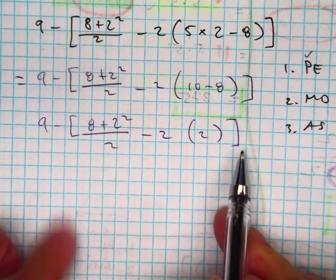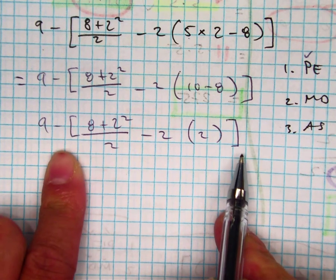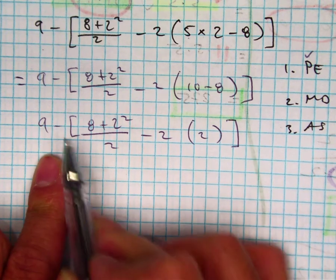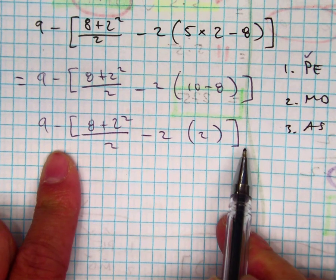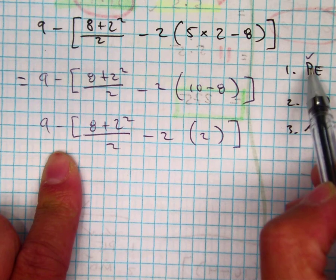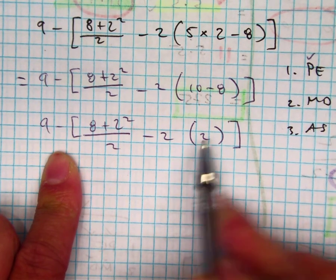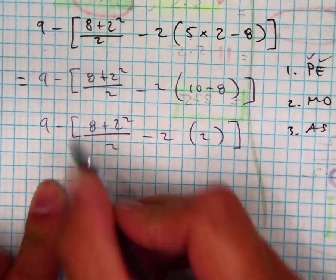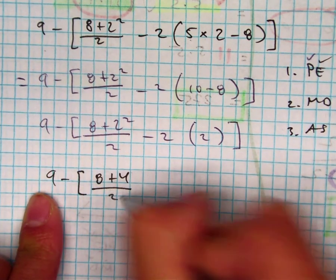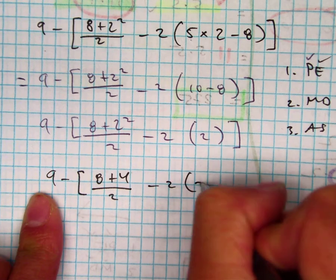And then the next thing I'm going to do is I'm still inside my bracket here. Now inside this big old bracket, I'm going to go back and do PEMDAS again. So that means there's no more parentheses now. You can't simplify anything here. You can do the exponent. So there's my exponent. 9 minus 8 plus 4 divided by 2 minus 2 times 2.